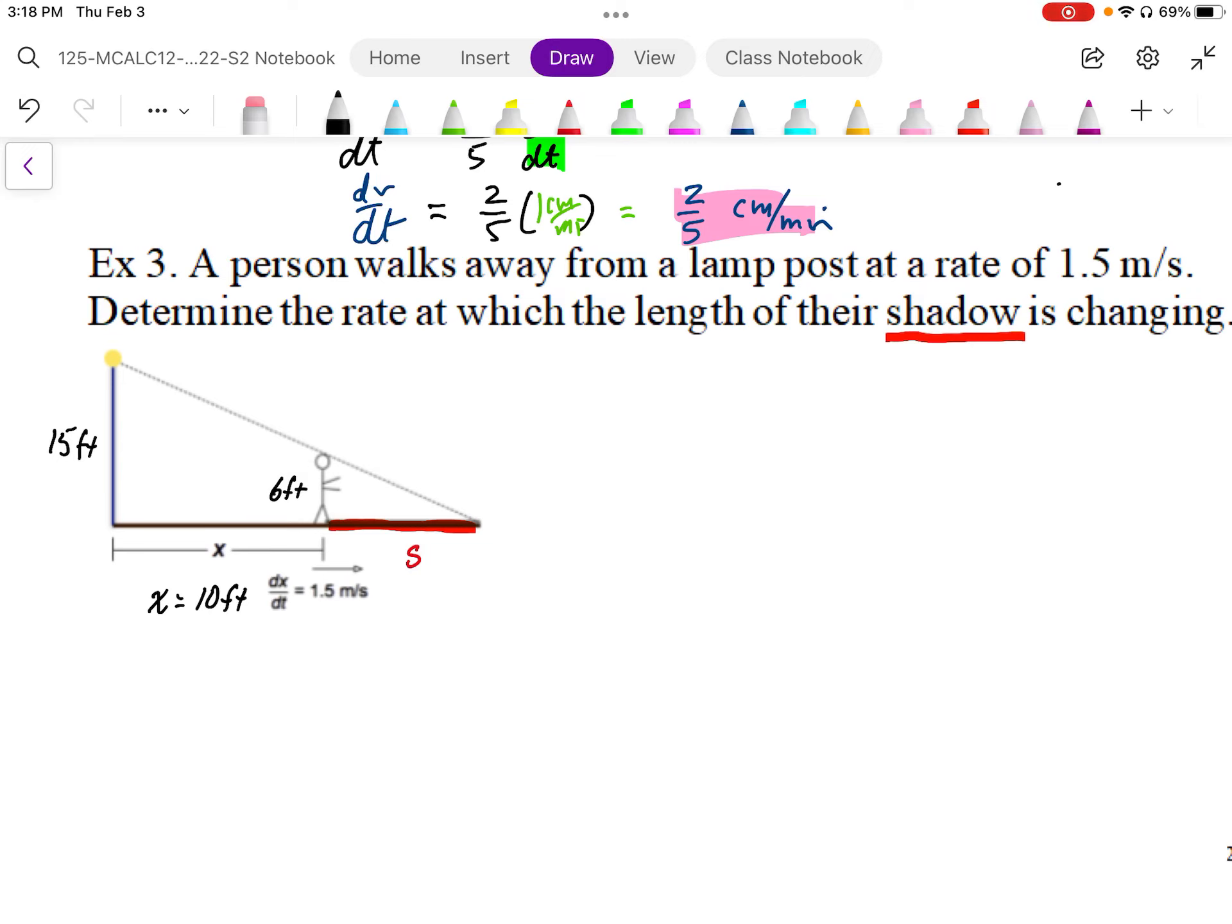We need to be able to relate this shadow length to the length of x. And to do that, we're going to use a similar triangle. So if we take a look at this triangle here, the big one, we know that the ratio of rise to run or 15 to x plus s. That ratio is equivalent to the smaller triangle that involves just s. That's going to be 6 to just s.